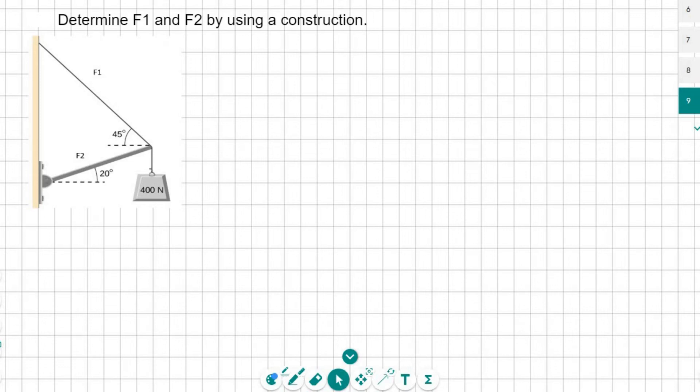We have to work out the force of F1 and F2 using a construction. Remember, your construction is all about protractor and ruler. But what I would do first, and it's very important, is you need to redraw this in a more simplified way.